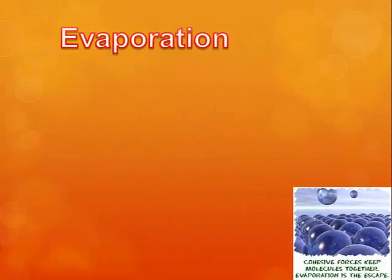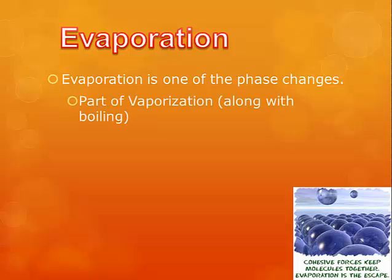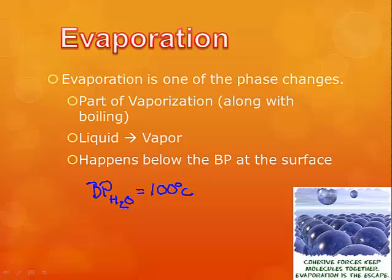Now we're going to shift gears and go back to our phase changes, looking at evaporation. Evaporation is one of our phase changes — it's part of vaporization along with boiling, meaning a liquid converts into a vapor. The difference between evaporation and boiling has to do with temperature: evaporation happens below the boiling point. We know the boiling point of H₂O is 100°C, where particles gain enough energy to overcome attractive forces and atmospheric pressure to escape into the vapor phase. Evaporation is the same phase change, but it happens below 100°C.